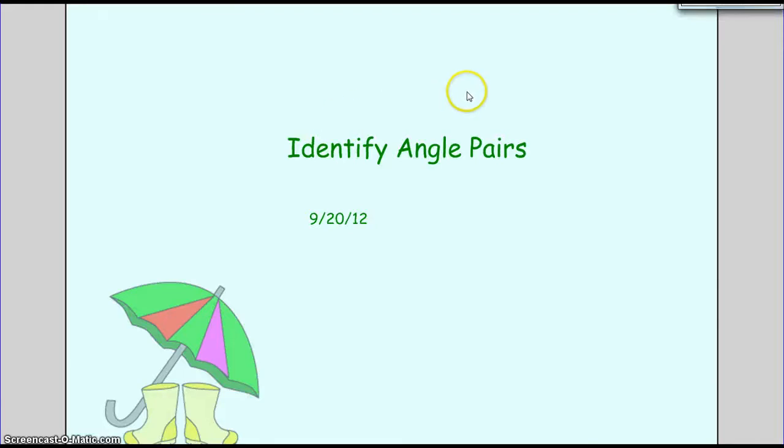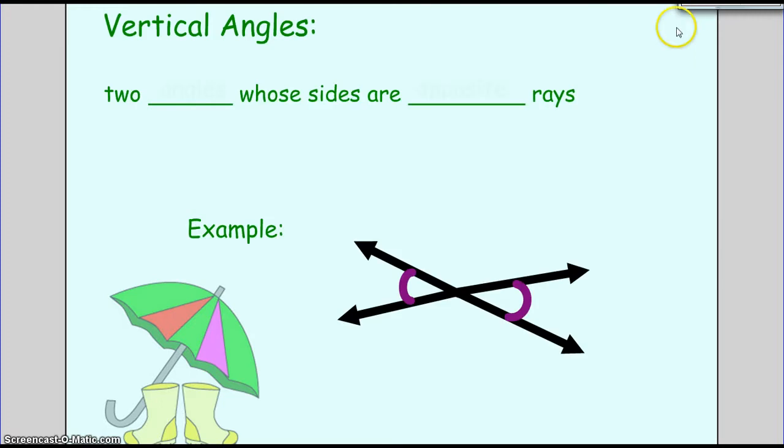This is identifying angle pairs. Vertical angles are two angles whose sides are opposite rays. The way I like to think of vertical angles is these are angles that are opposite of each other, they're across from each other - opposite or across.